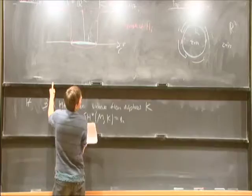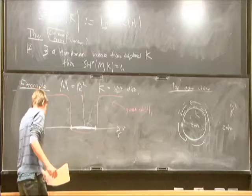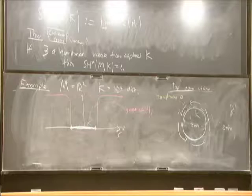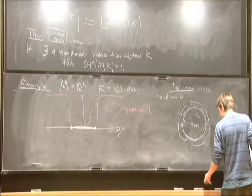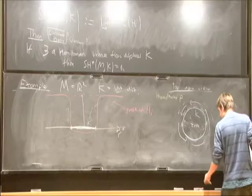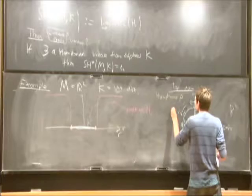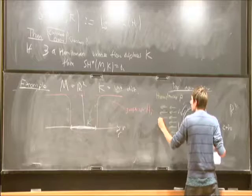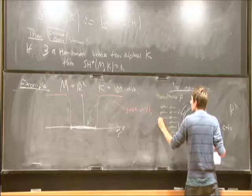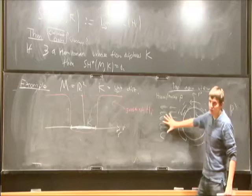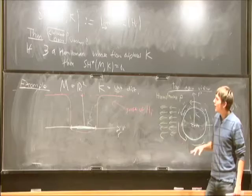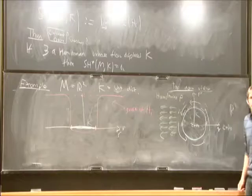Let's look at the Hamiltonian given by the coordinate P, which is the height in our coordinate picture. The Hamiltonian flow is the gradient of P rotated to the left by 90 degrees, so the flow of P uniformly travels to the left. If I look at the compact set K and see what happens when I flow under this vector field, it uniformly flows to the left and eventually is displaced from itself. So the symplectic cohomology of this set K is going to be zero.